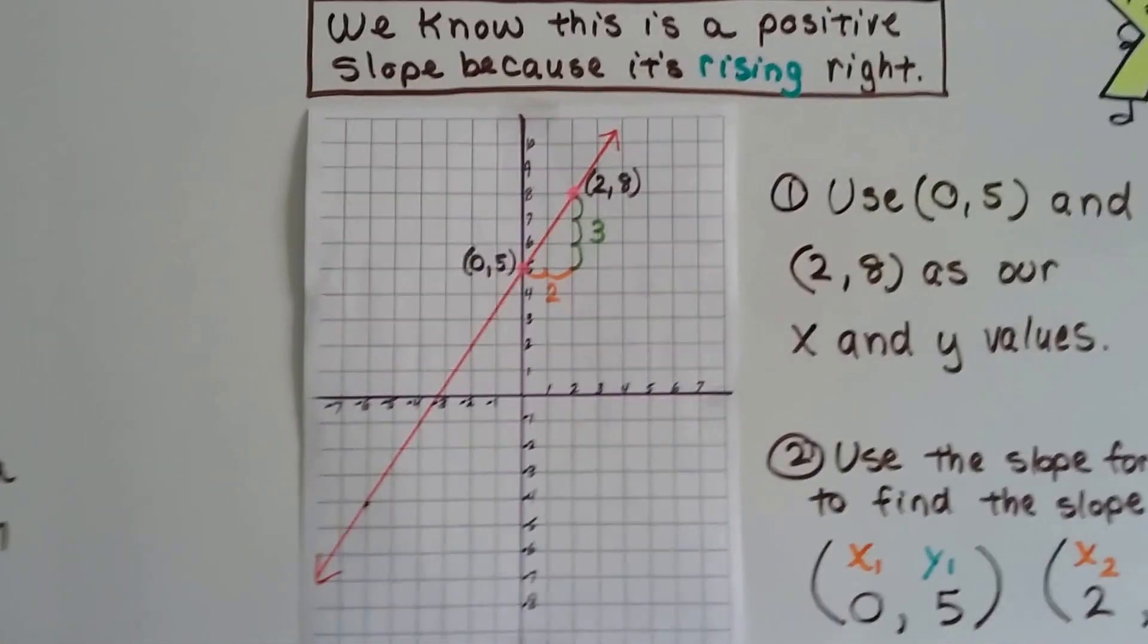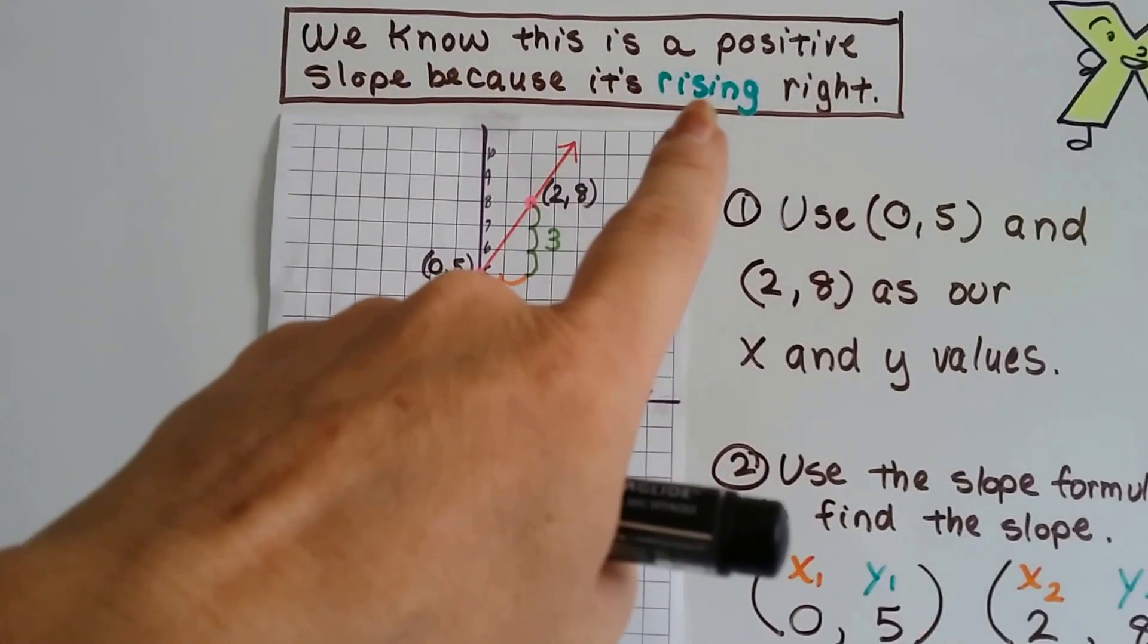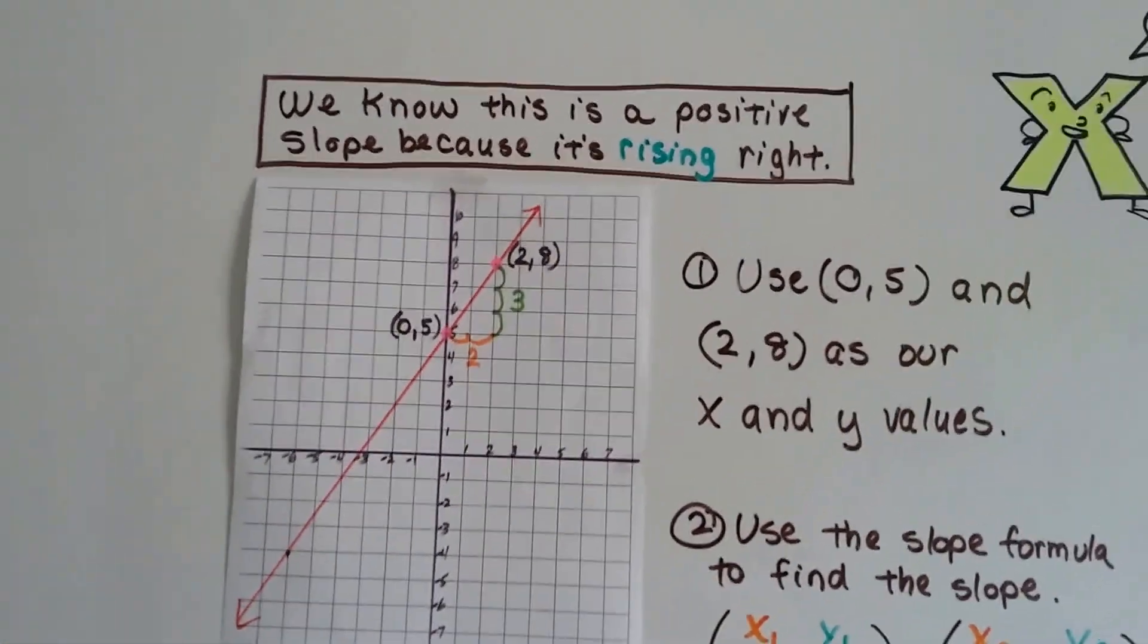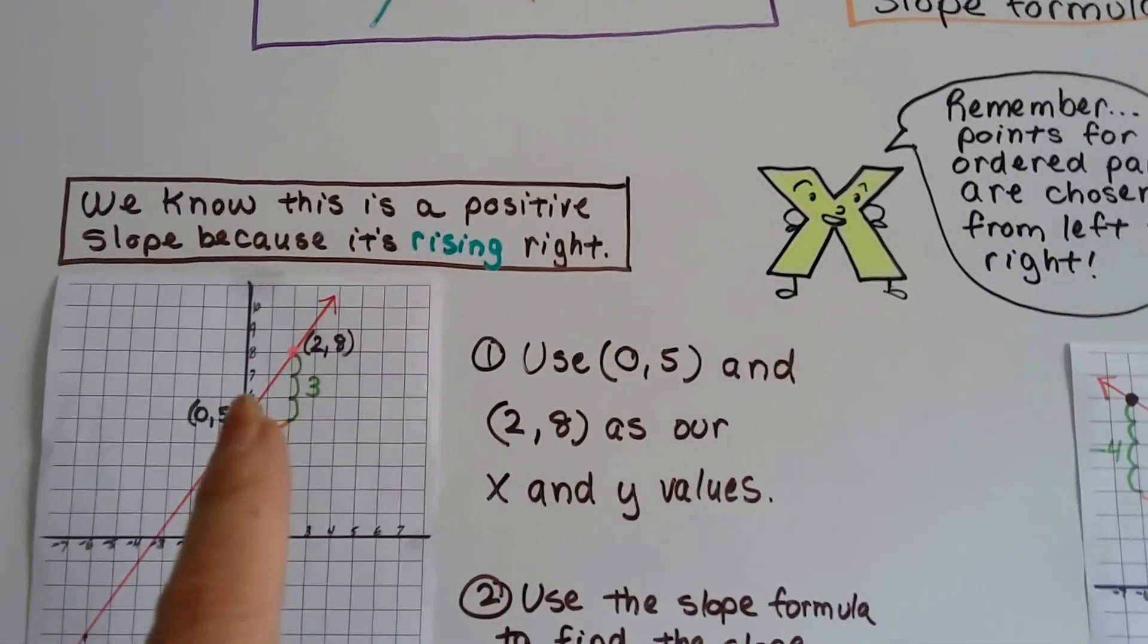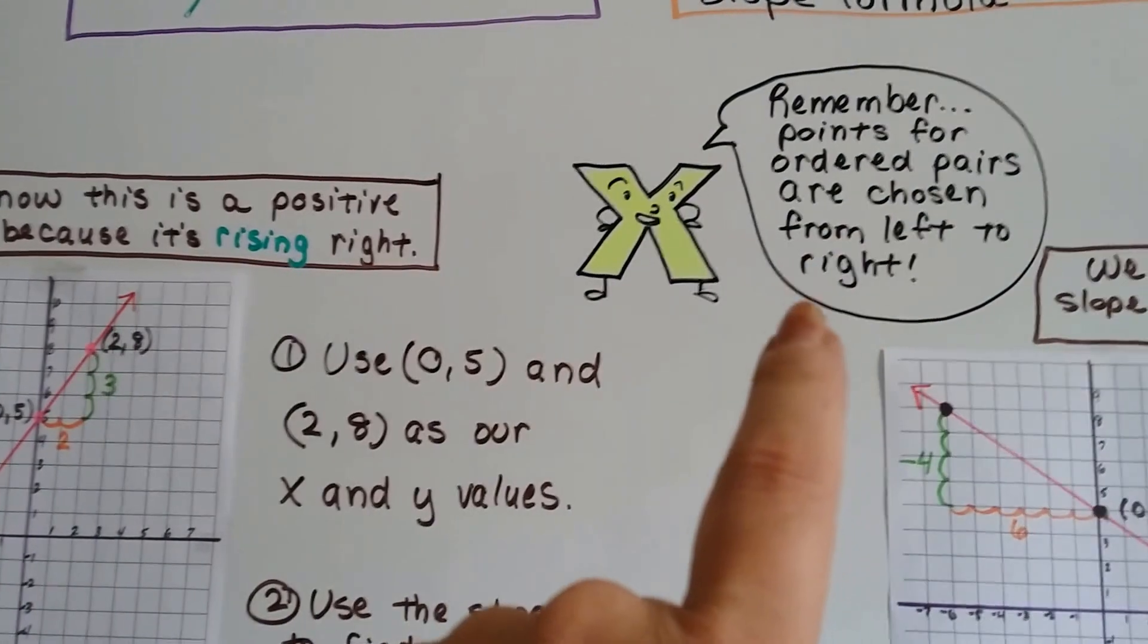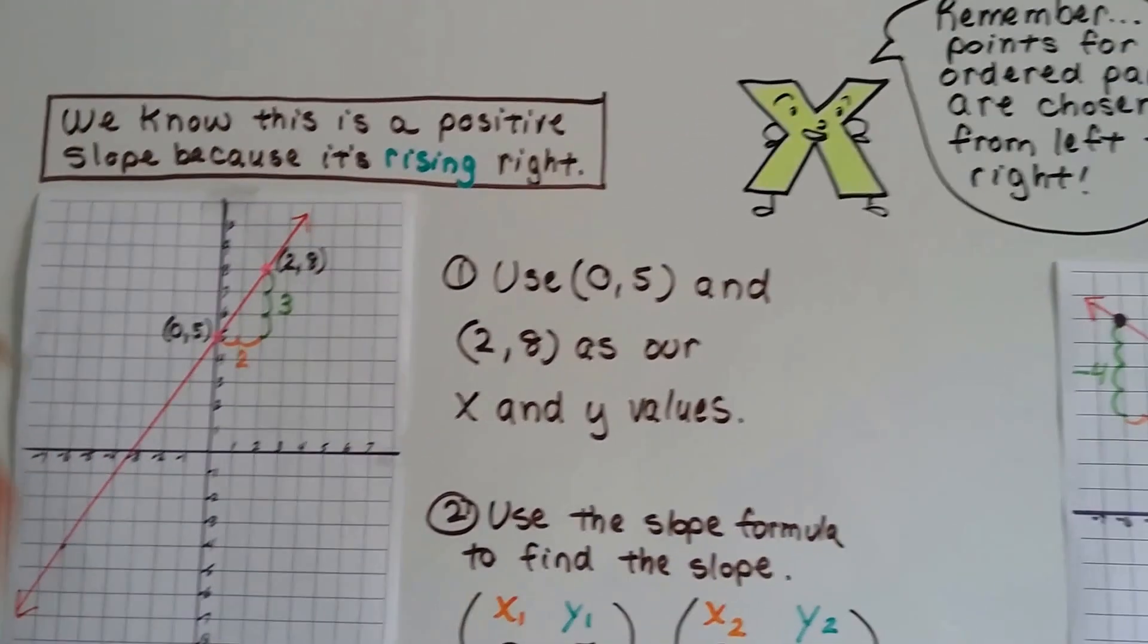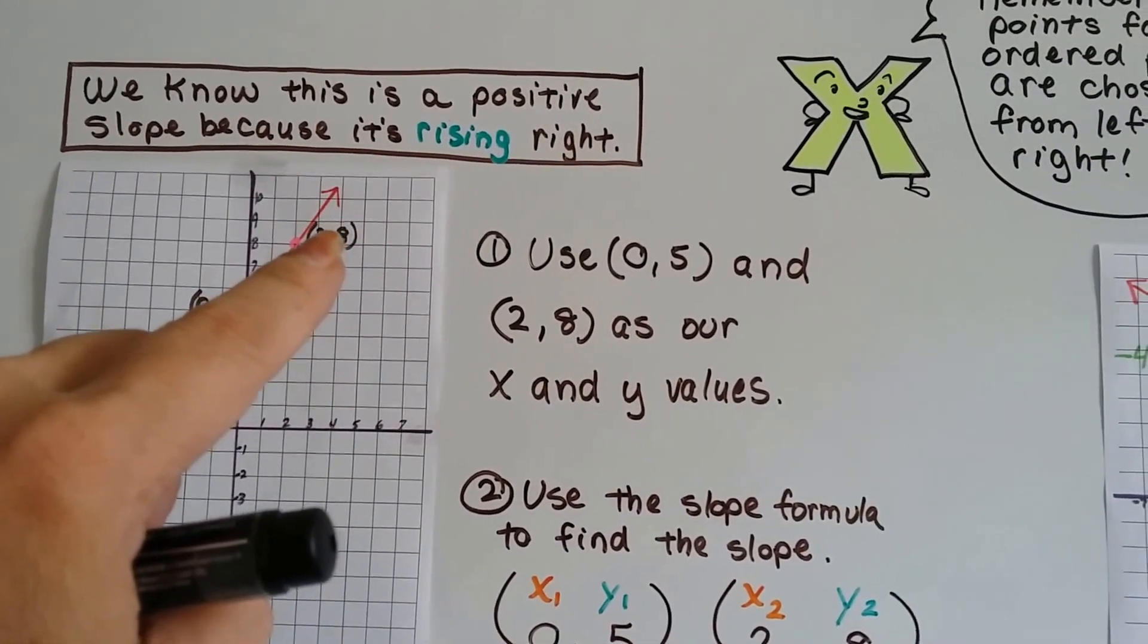So, just from looking at this graph, we know that this is a positive slope because it's rising to the right. Like we said in previous videos, when it's rising to the right, when we do the slope formula, it's going to have a positive number. And remember, when we choose our ordered pairs, our x and y values, we have to do it from left to right. So, we're going to choose this one first and this one second, left to right.